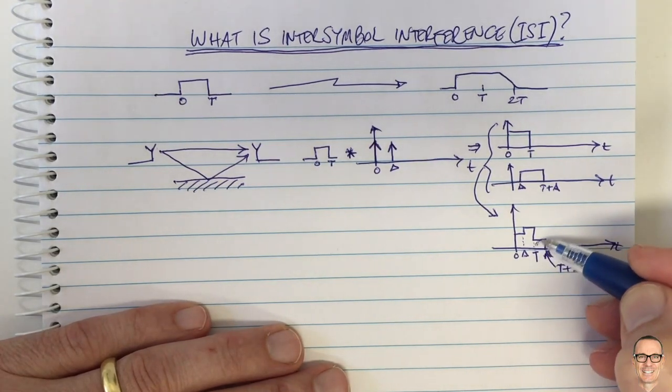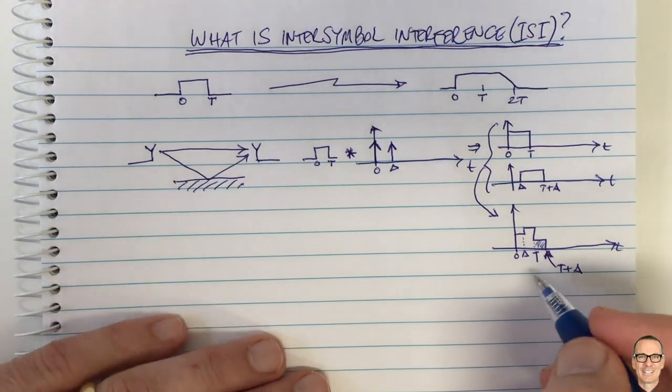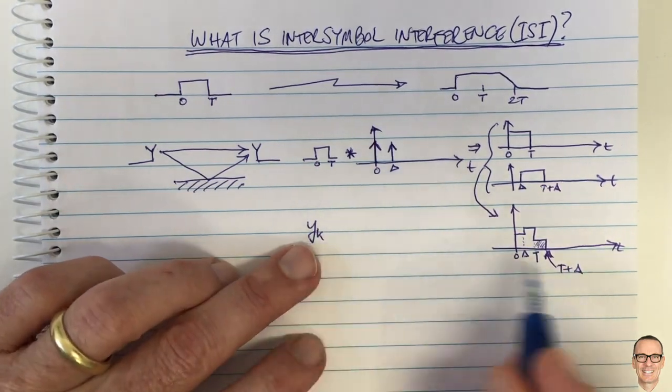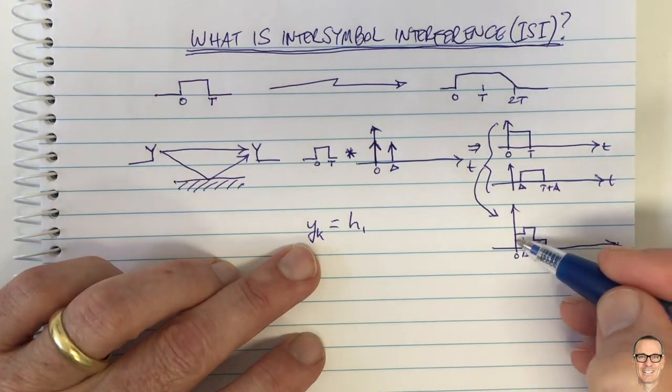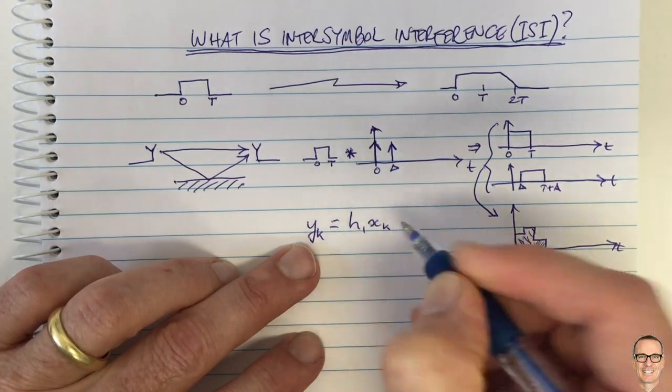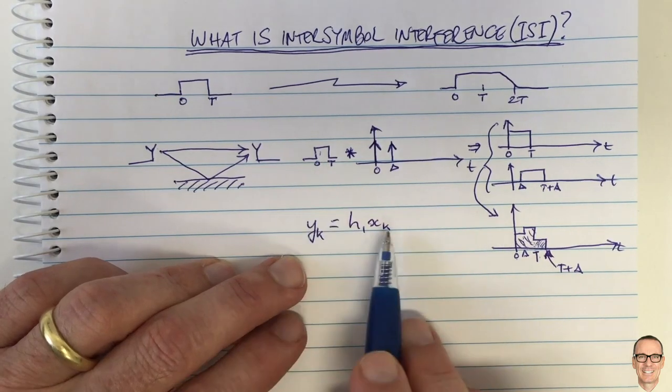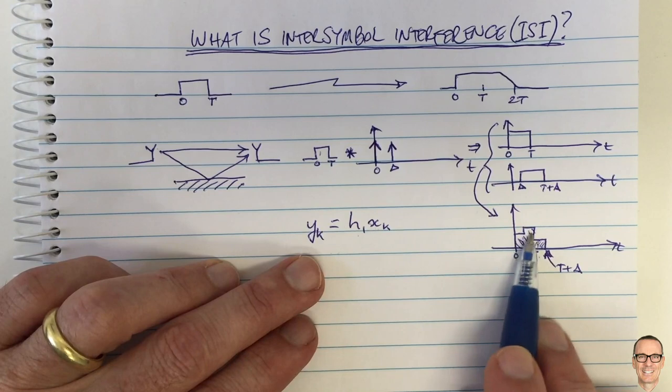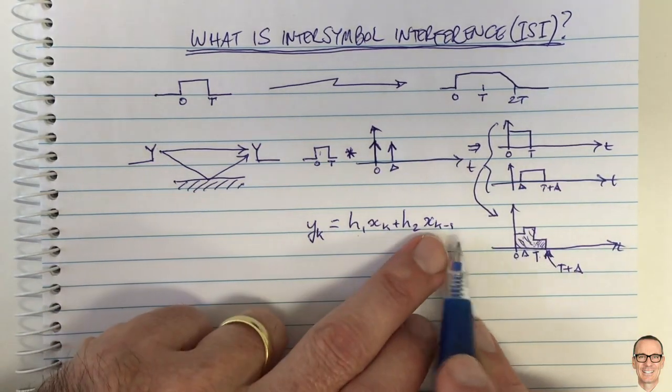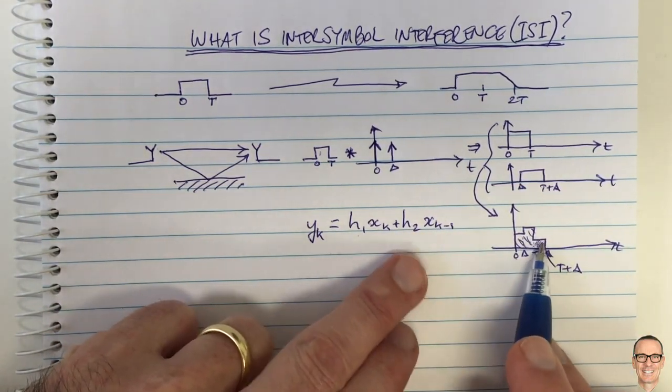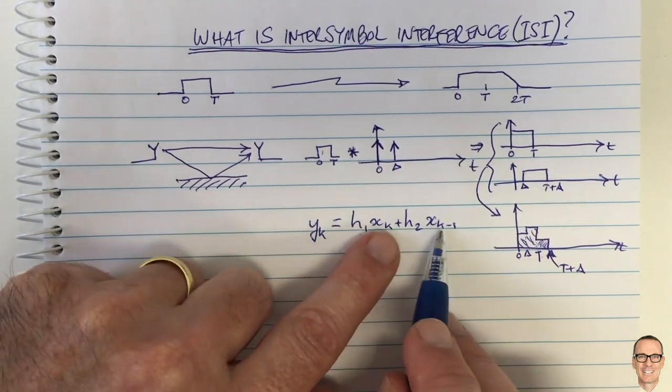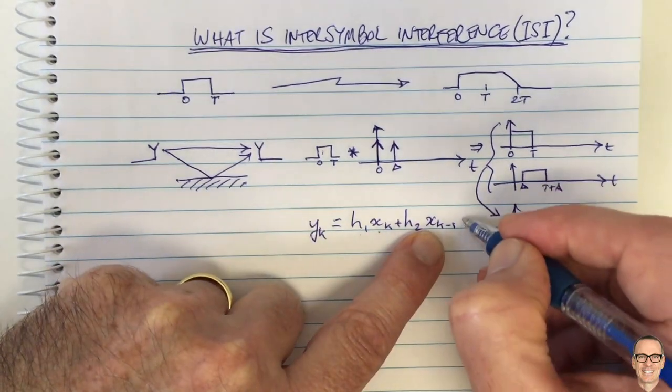The intersymbol interference is this component here. If we were to write a digital equation for this, we have yk at the kth time instance. We would be receiving h1, which is the component from the amount of energy that arrives between zero and T, times xk—so that's this symbol that was sent. Is xk a one, is it a zero? That's xk. h1 is the component of energy that arrived between zero and T. Then we'd have plus h2 times xk minus one, because this will be the energy that is happening and interfering and carrying over into the next time slot. When you're looking at the current time slot, you'd be having energy from the previous symbol, plus noise of course.